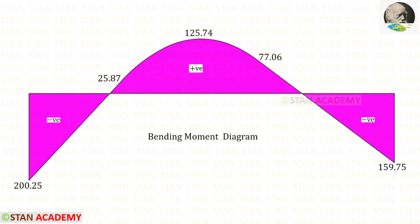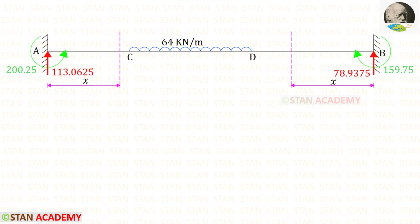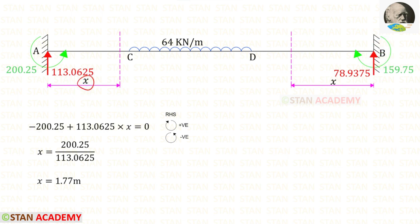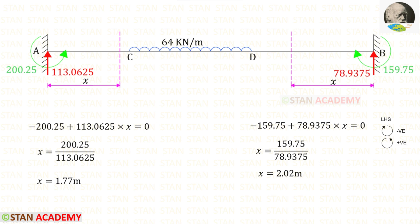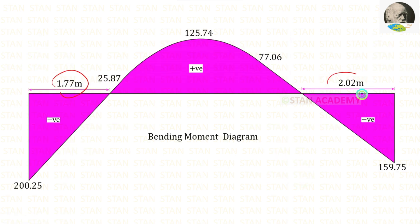We can see the bending moment diagram. At two points the bending moment becomes 0. We make sections at those points to find the distances. The first section is at distance x from point A, and the second at distance x from point B. Using the right-hand-side rule, x = 1.77 m for the first point of contraflexure, and using the left-hand-side rule, x = 2.02 meters for the second. Now we are going to end this session. Thank you for watching this video.